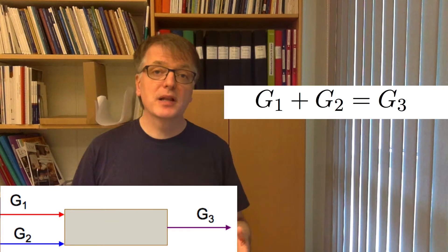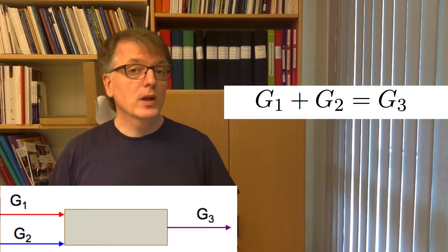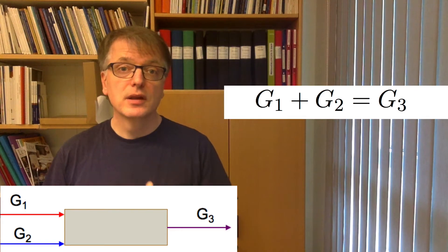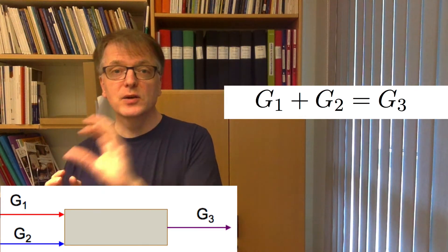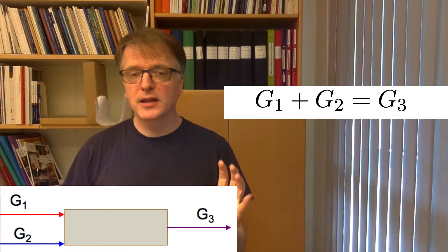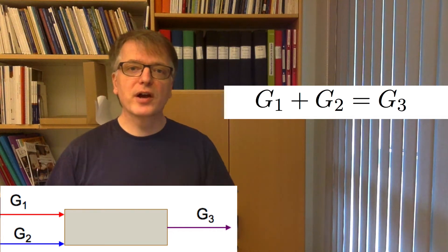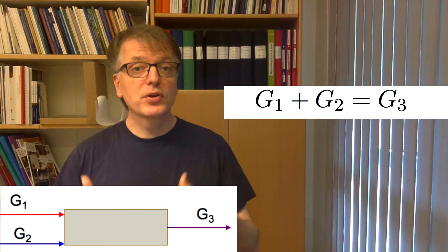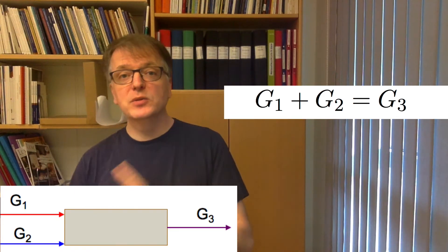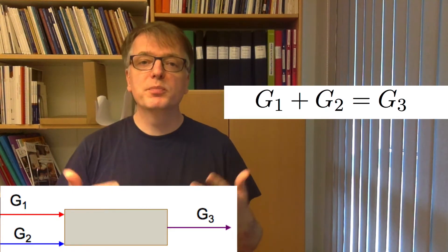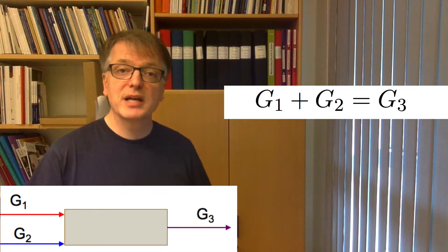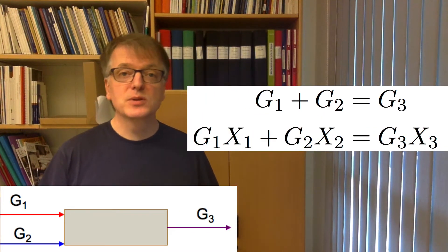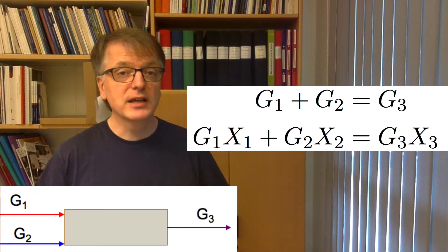What about the mass balance for water then? Well you have a water content x in each flow and if you multiply g with x what unit do you get then? Well g is in kilogram of dry air per second and x is kilogram of water per kilogram of dry air. So if you multiply g with x you get kilogram of water per second. So the mass balance becomes g1 times x1 plus g2 times x2 equals g3 times x3.